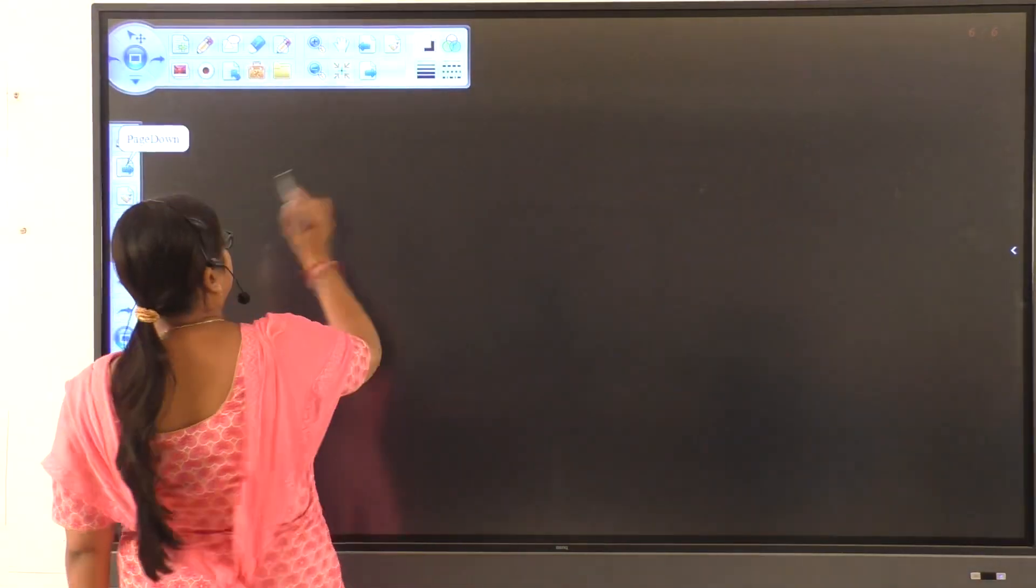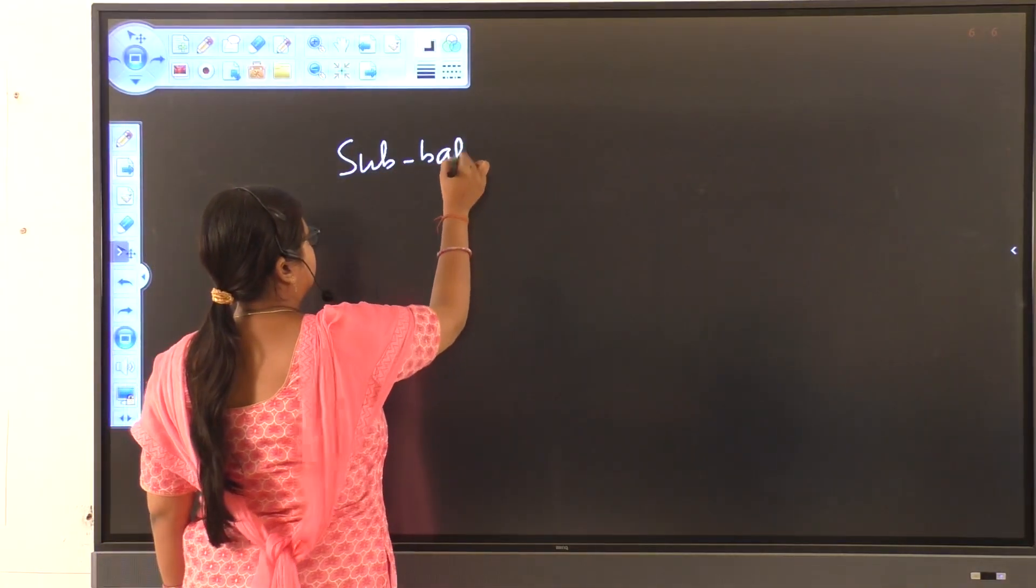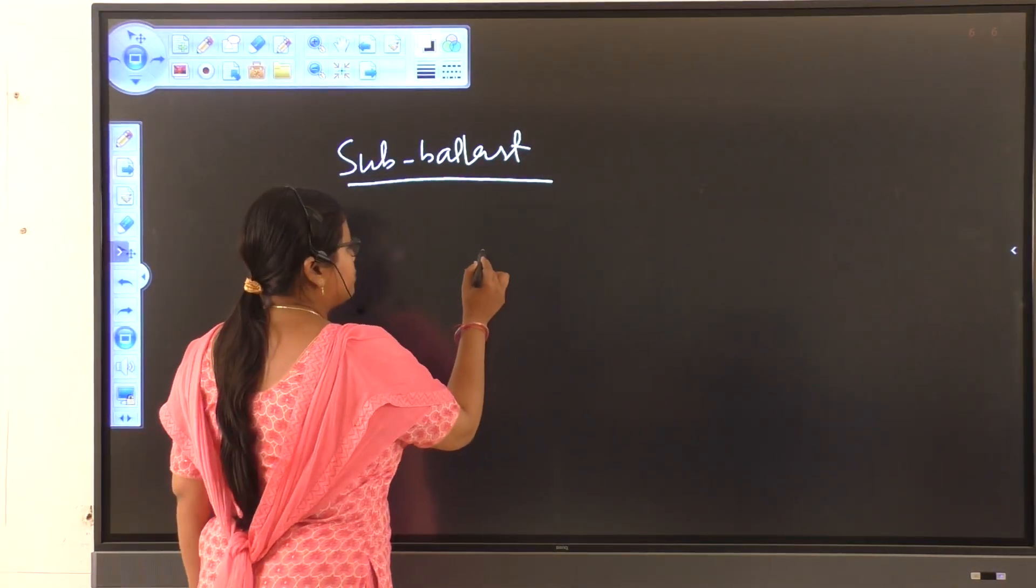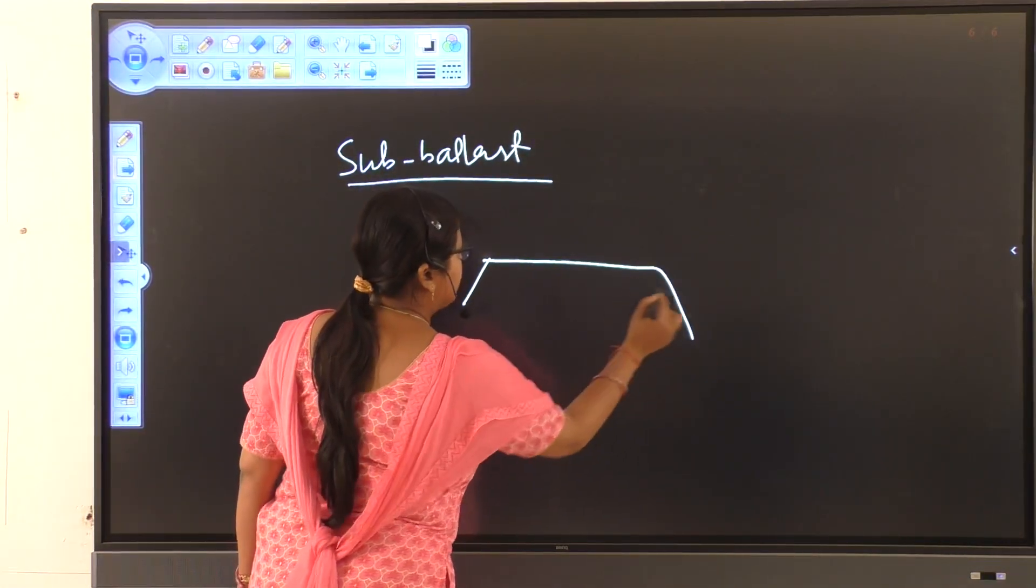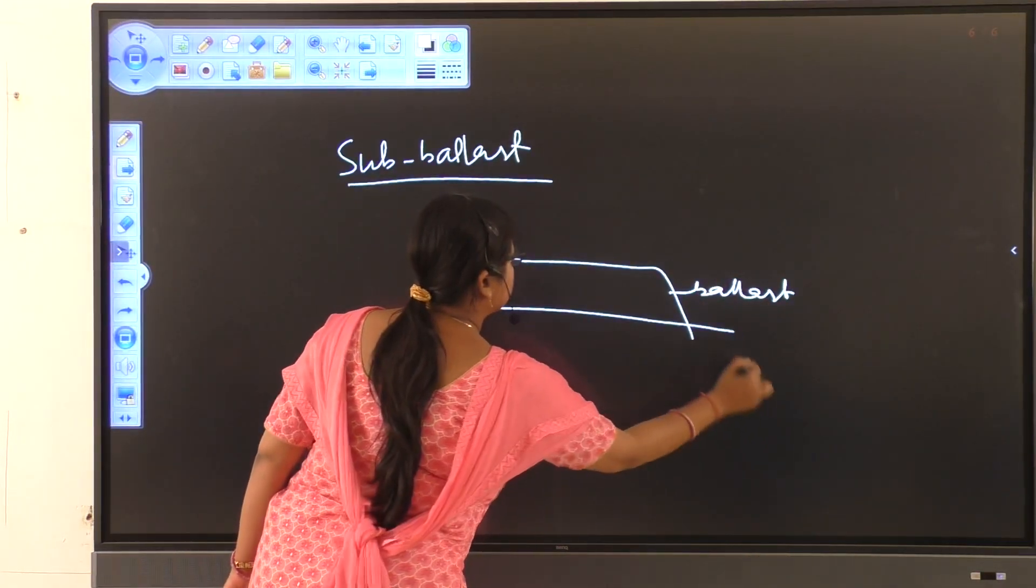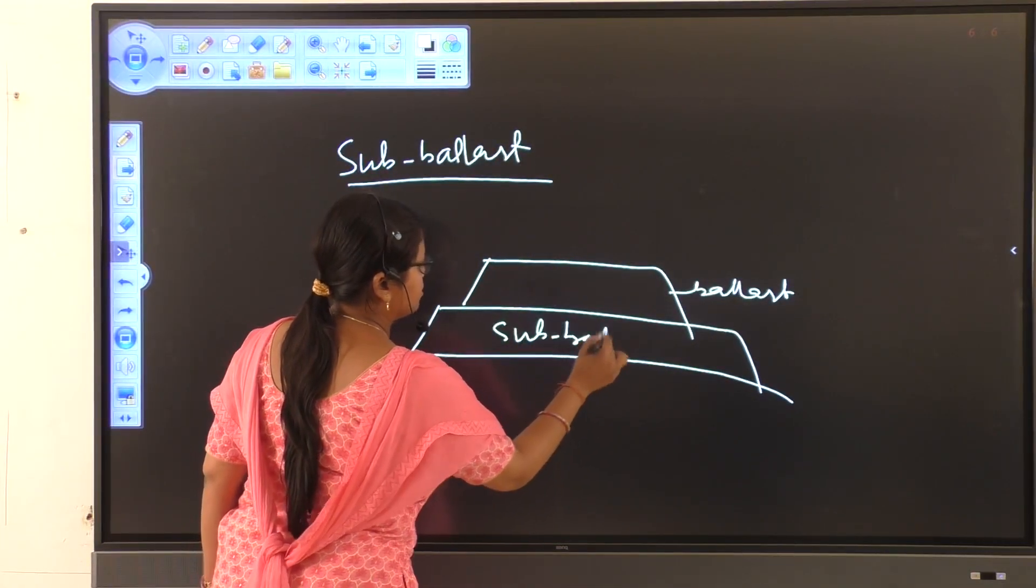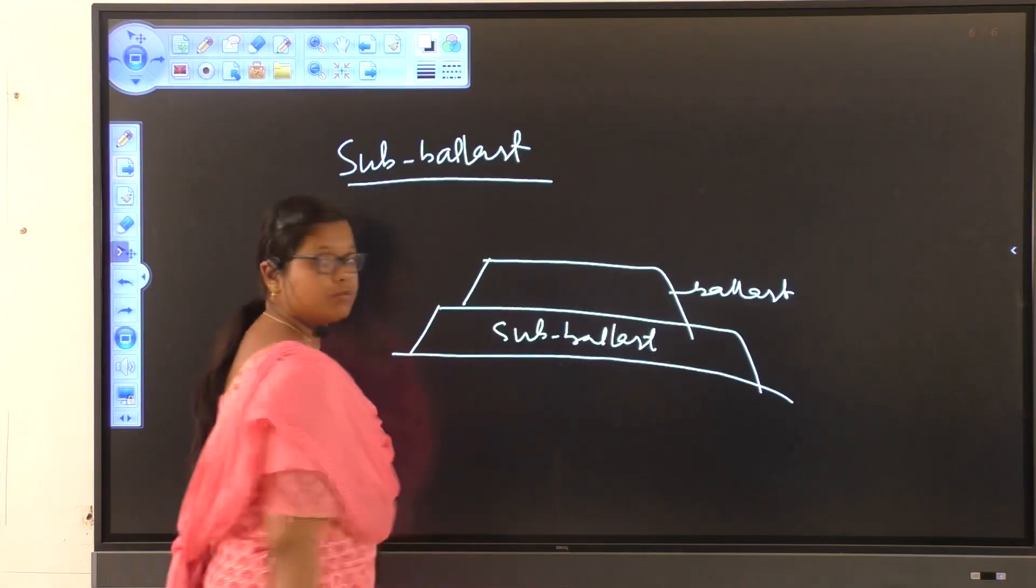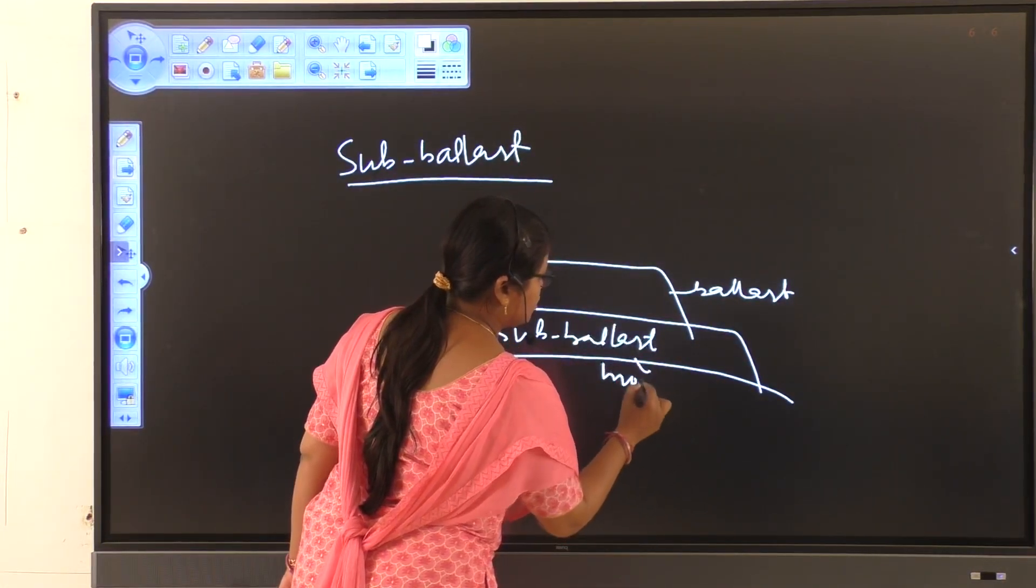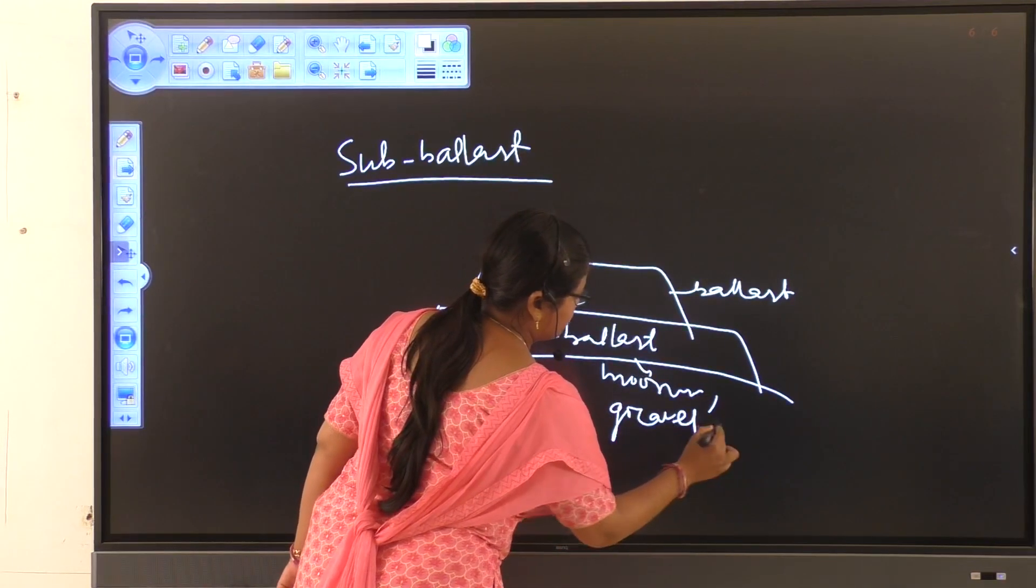Next, sub-ballast. So, down the ballast layer, there is a layer which is known as sub-ballast. And it consists of small size moorum, gravel, etc.